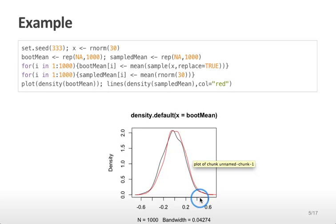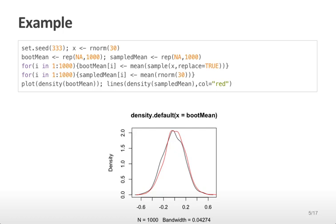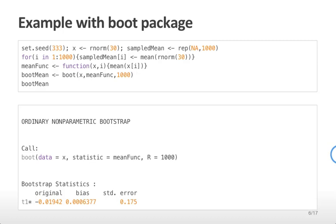What we can use is this repeated sampling of the original data to approximate the distribution that we would get from repeated samplings of the entire population. You can also do this with the boot function in the boot package in R. The way we do this is to compare the distribution of the sampled mean versus the bootstrapped mean. The sampled mean is calculated by repeatedly drawing 30 normal random variables and calculating their mean. To get the bootstrap mean, we use the boot function.